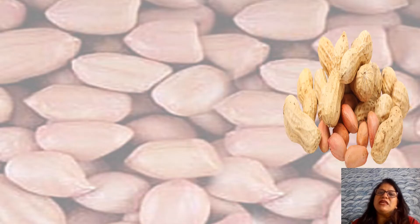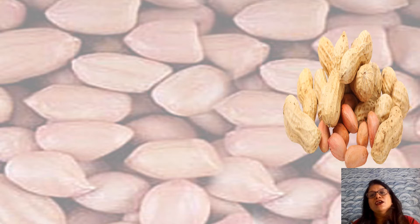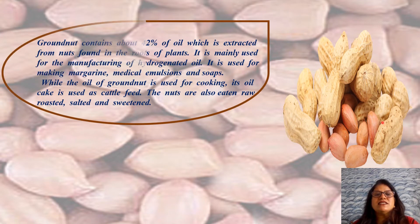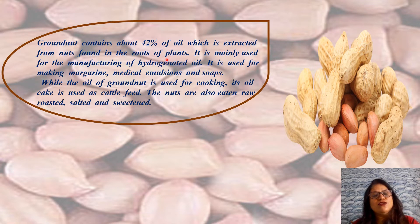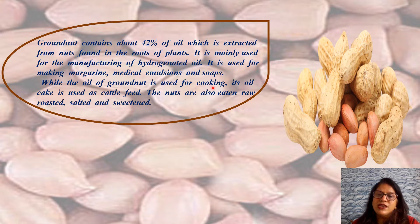Groundnut is also known as peanut or monkey nut. It is believed that groundnut was introduced in India from Brazil during the 16th century. Groundnut contains about 42 percent oil, which is extracted from nuts found in the roots of plants. It is mainly used for manufacturing hydrogenated oils and also for making medical emulsions and soaps. While the oil of groundnut is used for cooking, its oil cake is used for cattle feed.